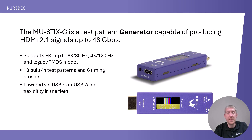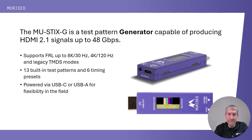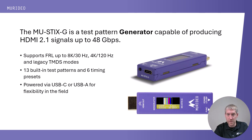First up, let me introduce the STIX-G. This is a cost-effective HDMI 2.1 8K signal generator, fully compliant with 48 gigabit per second FRL bandwidth. It's capable of generating 720p, 1080p, 4K, and full 8K signal timings, all at 8, 10, and 12-bit color depths across RGB, 422, and 444 color spaces.